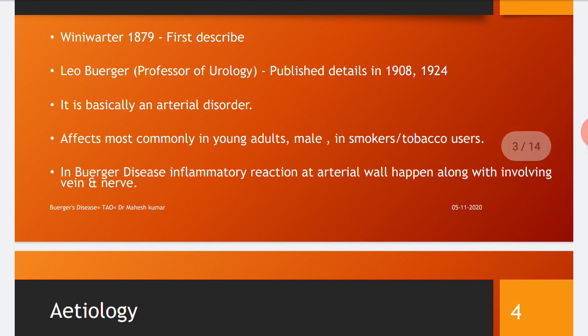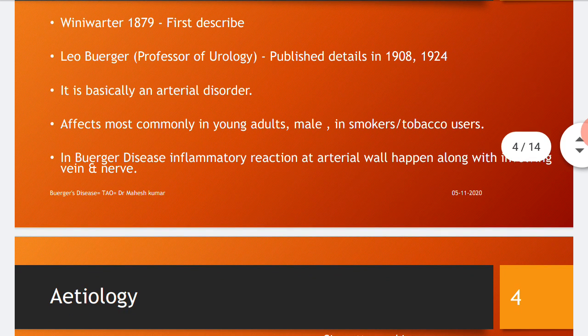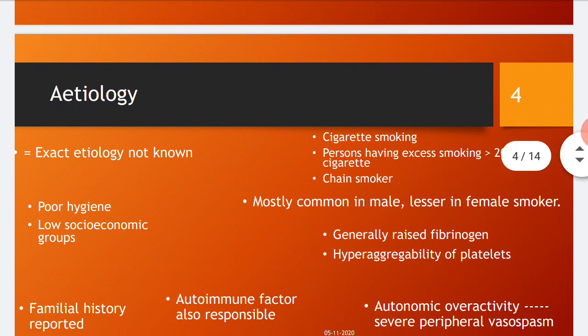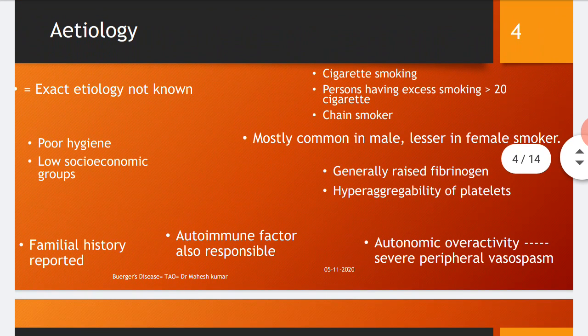In Buerger's disease, inflammatory reactions at the arterial wall occur, along with involvement of adjacent veins and nerves. The surrounding nerves and veins are affected by the inflammation reaction of the arterial wall, and overall symptoms are produced with this reaction.